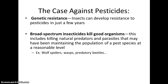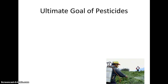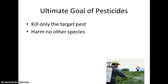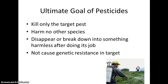Some of these natural predators include wolf spiders, wasps, and certain types of beetles. If we wipe out a natural predator, that can unleash new pests, which in turn can have unexpected negative effects on our crops. Ultimately, our goal is to kill only the target pest, so a narrow spectrum pesticide is best. We want it to have short persistence, break down quickly after doing its job, not cause genetic resistance, and be cheaper than doing nothing — which currently, it is.